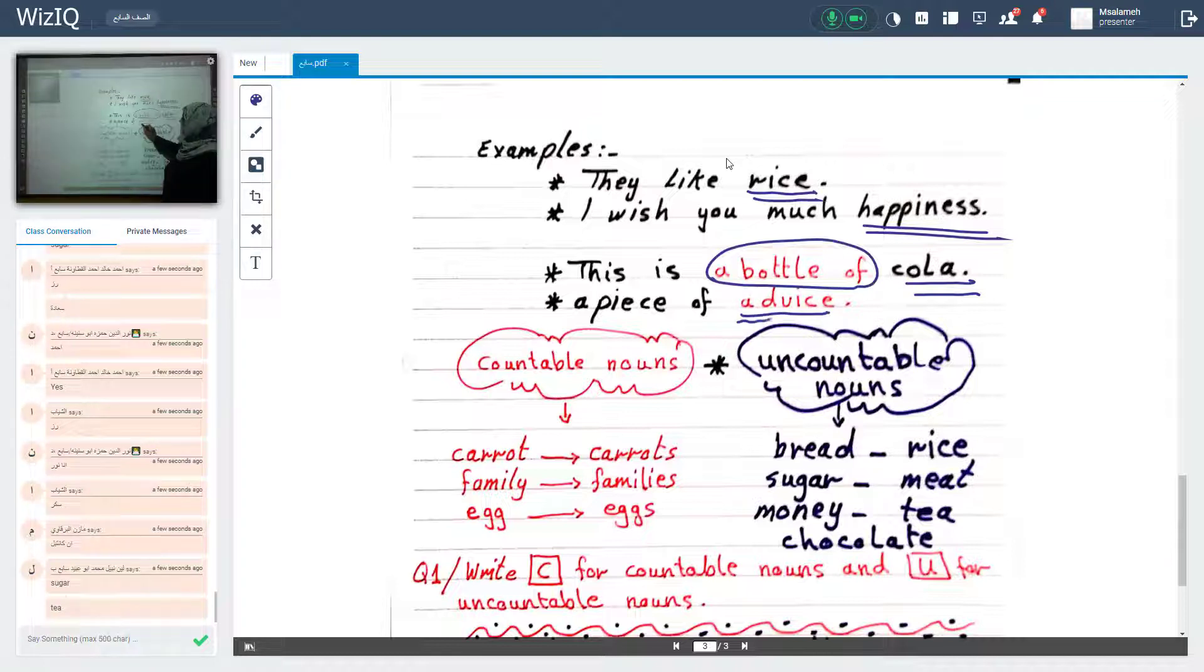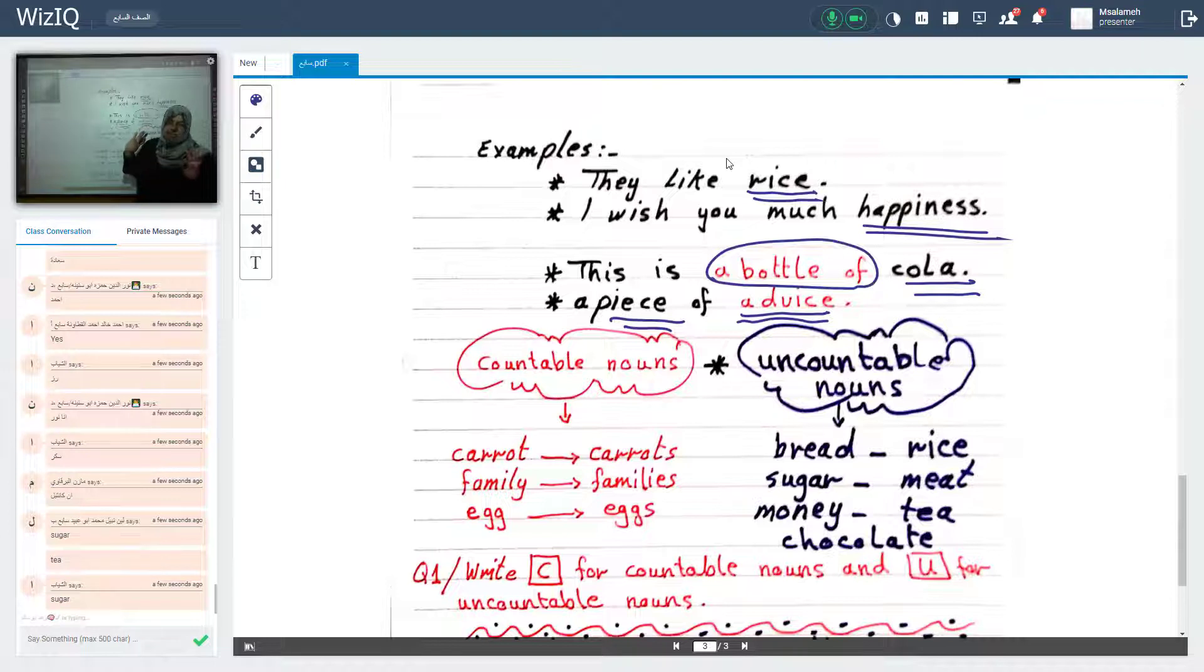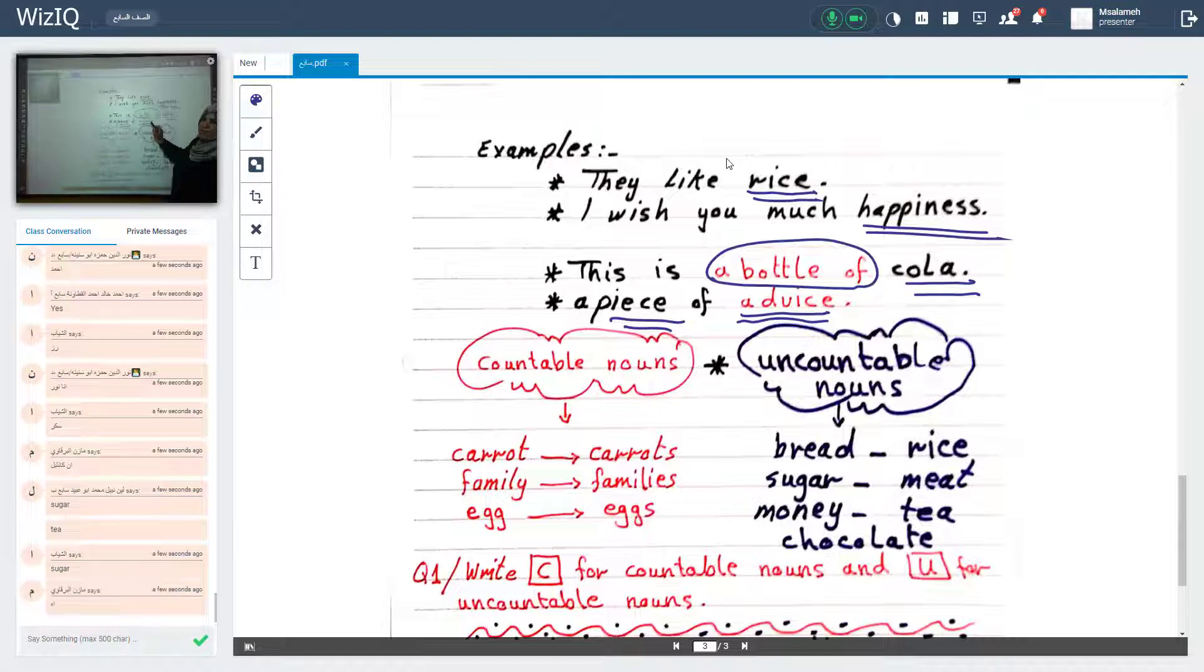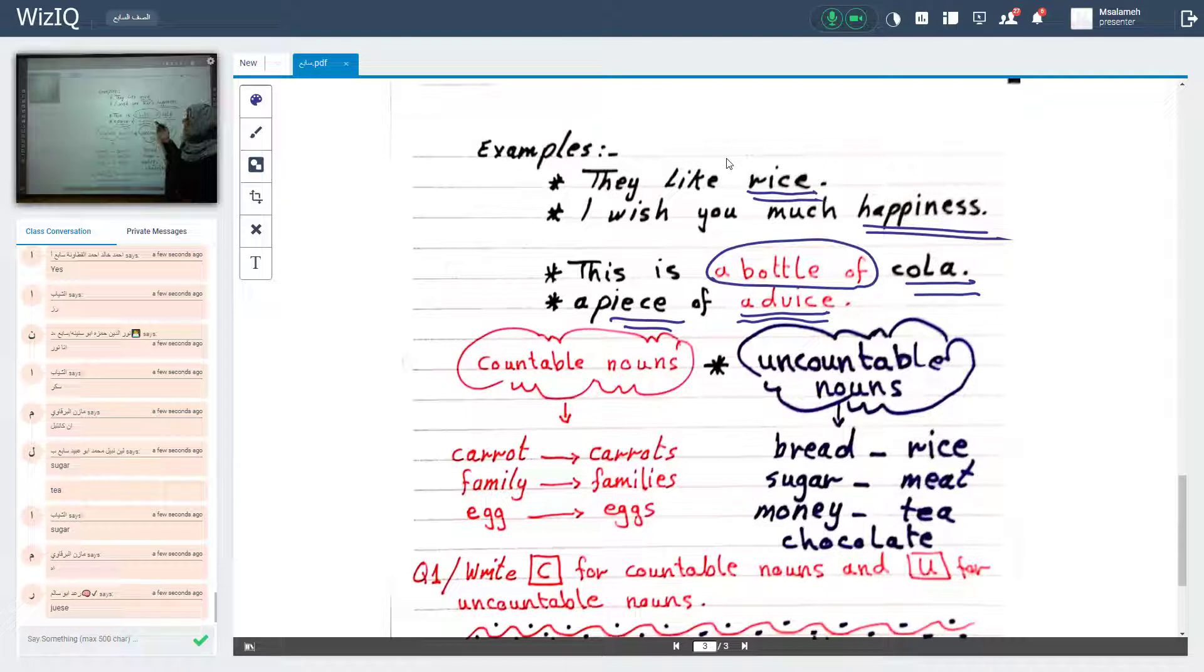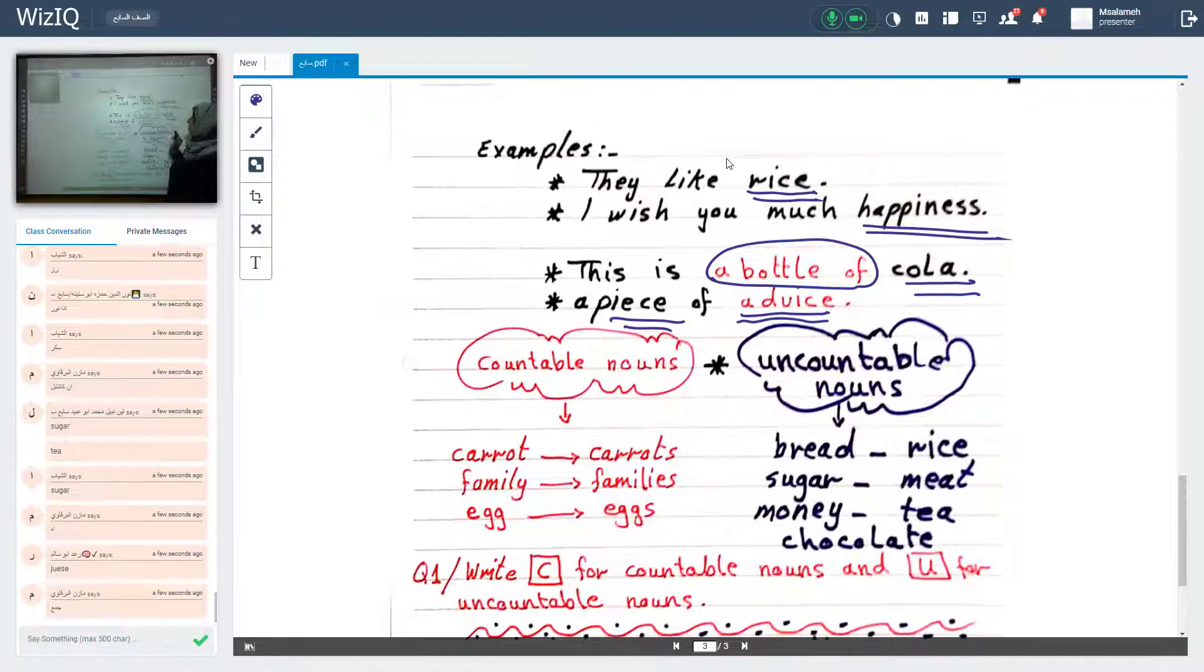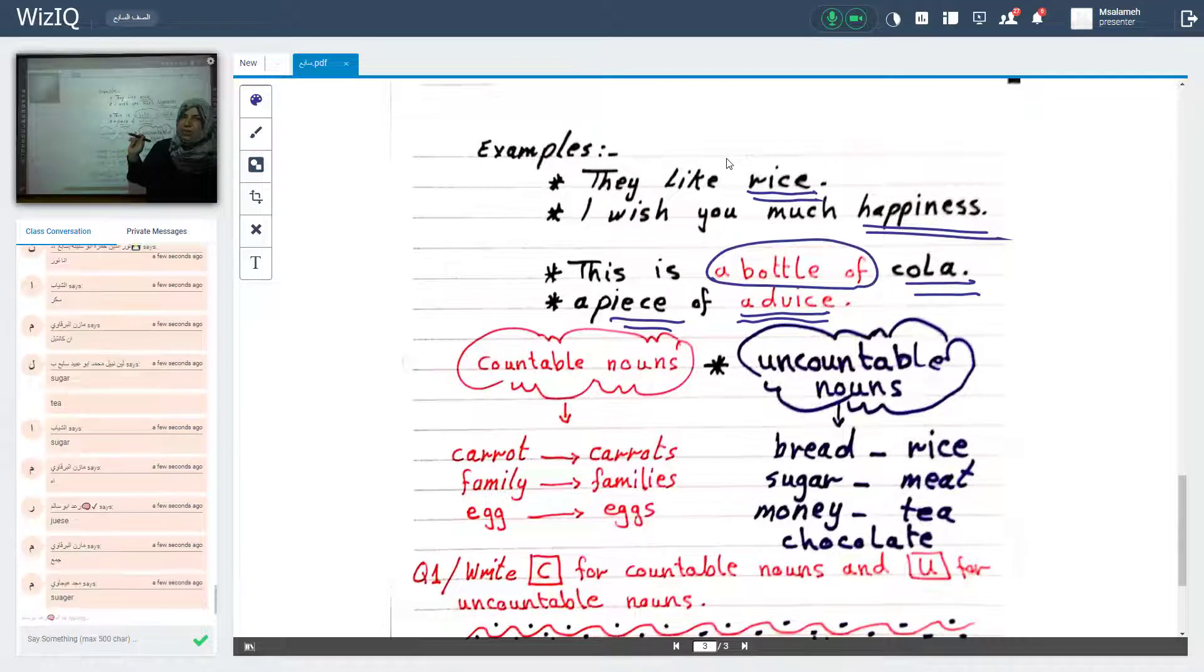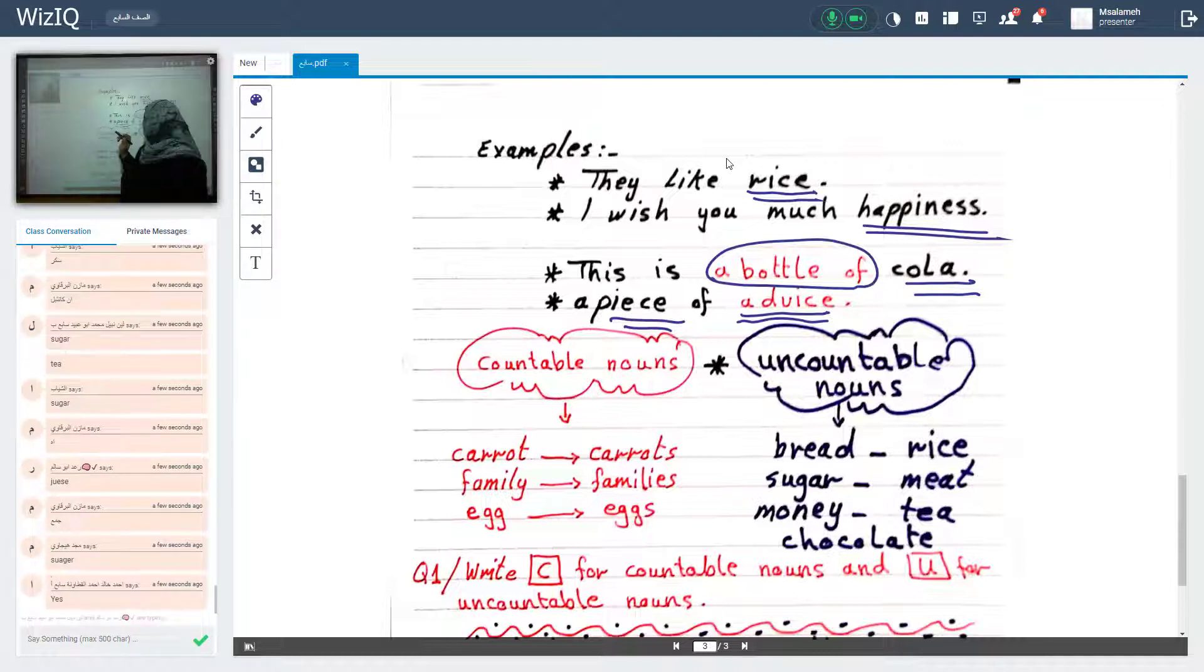Advice, uncountable. النصيحة. Advice, uncountable. Before it, we use a piece of advice. This phrase, we use it to count this uncountable word. استخدمت هذه العبارة حتى تصبح الـ uncountable عديتها. ولا هي أصلاً uncountable لو إجت بمفردها. Any question? Is it clear? Let's move to another point.